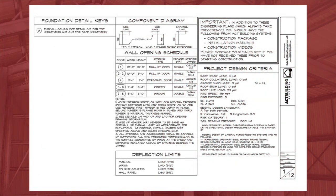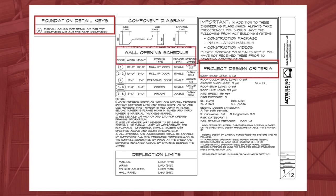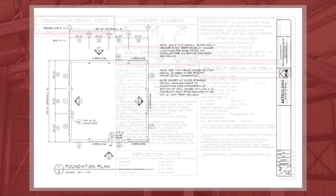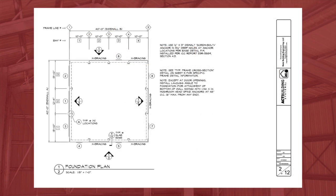Also located on sheet 1 will be a design project criteria box, a detail key box, and a wall opening schedule. On the engineering plans, you will see circles that have two numbers in them. The bottom number represents the page number, while the top number is the detail number on that page.